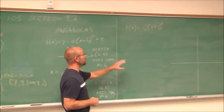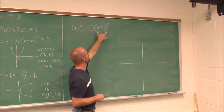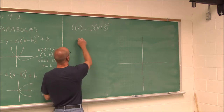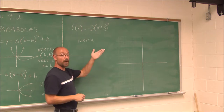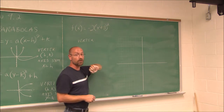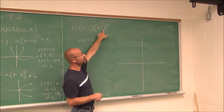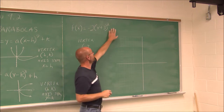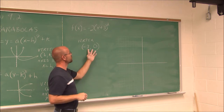Let's graph this function: f(x) equals negative 2 times the quantity (x plus 3) squared. I'm going to use the tools we covered in 9.1. First, I'll identify the vertex, which is the h, k value. Since this is a function, it's a parabola with x squared — it either opens up or opens down. This opens down. The vertex h is the opposite of what I see in the parentheses, so h is negative 3. I don't see a k value, so k is 0. The vertex is (negative 3, 0).